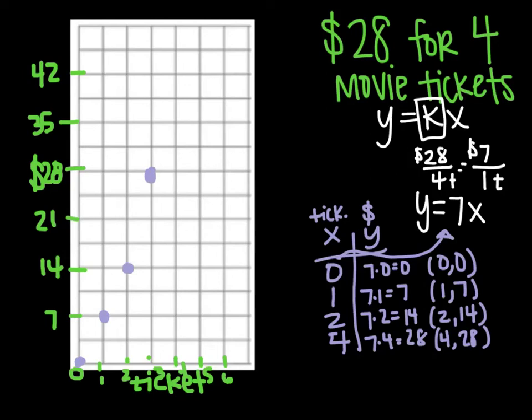And I know that I could keep going if I wanted to. But as you can see, this makes... oops, I messed up. That is 3, 4, 28.